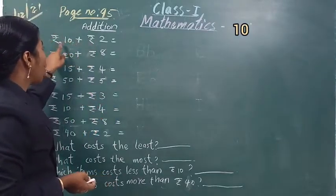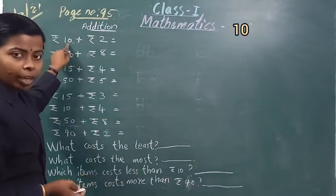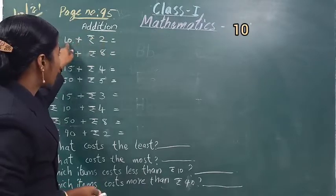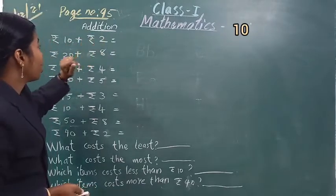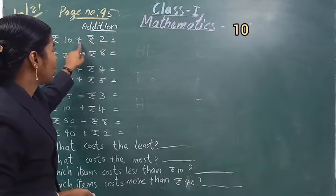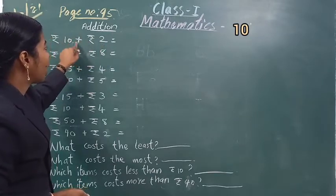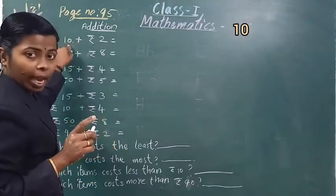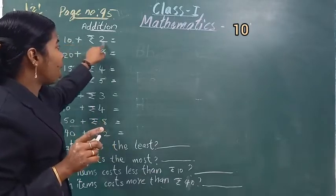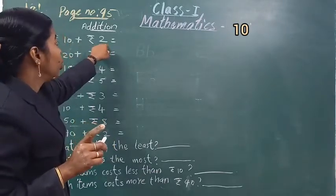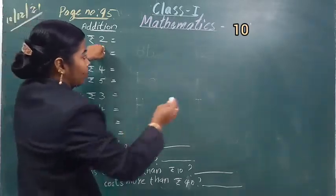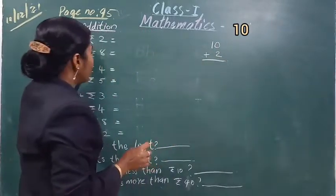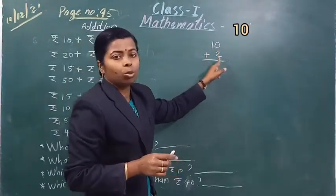See, the first one is Rupees 10. It is 10 rupees and 2 rupees. What do we need to do? Rupees 10 plus Rupees 2. This sign means we need to add. This number is 10. 10 plus 2.